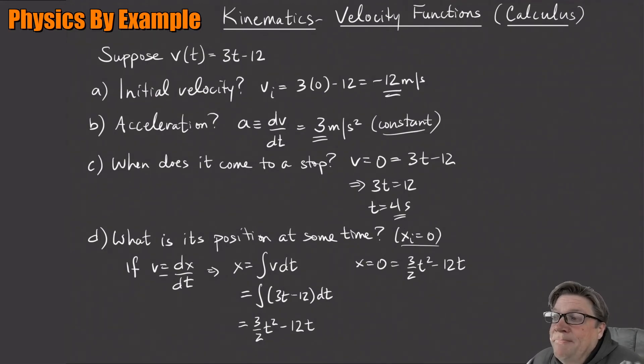That's a quadratic, so we want the other solution. Let's factor the t out. We already know we want the one where t is not 0. This becomes 3 halves t minus 12 equals 0. So 3t is 24, so t is equal to 8 seconds.